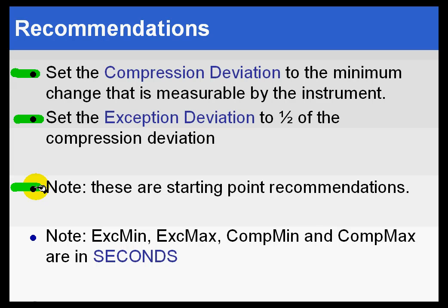The worst tuned systems are those where all 100,000 PI tags are created in a three-day flurry of activity, and then nobody ever looks at the exception and compression deviations. And until somebody starts looking closely and saying, hey, why is this one getting so much more data than the other one, et cetera? So those are our recommendations.